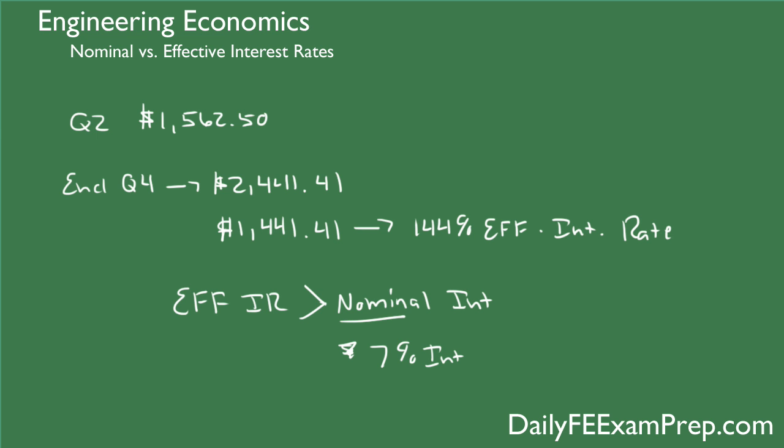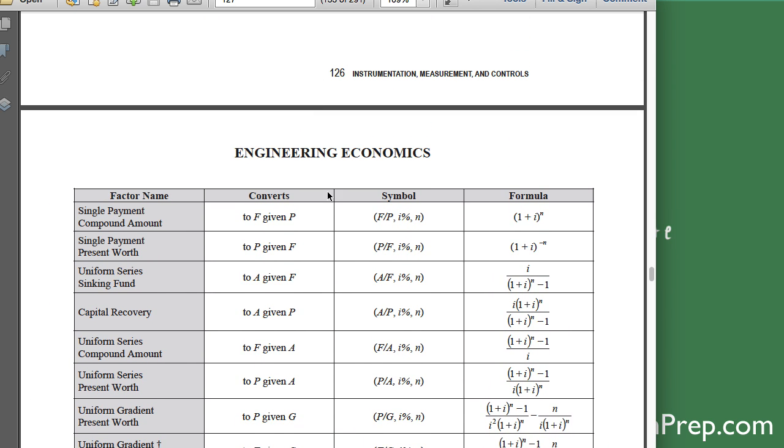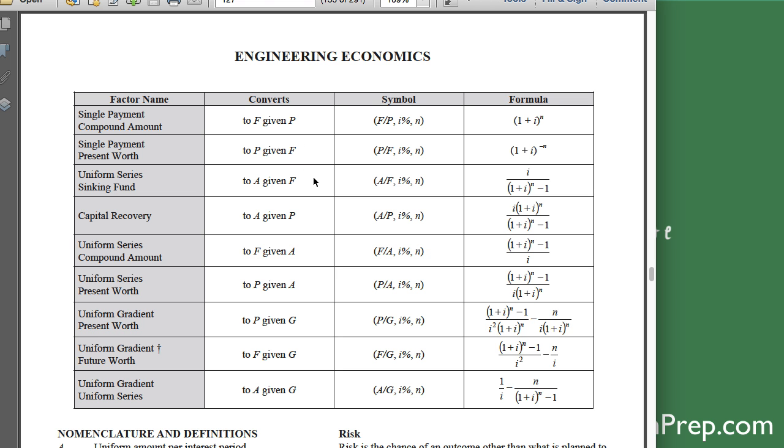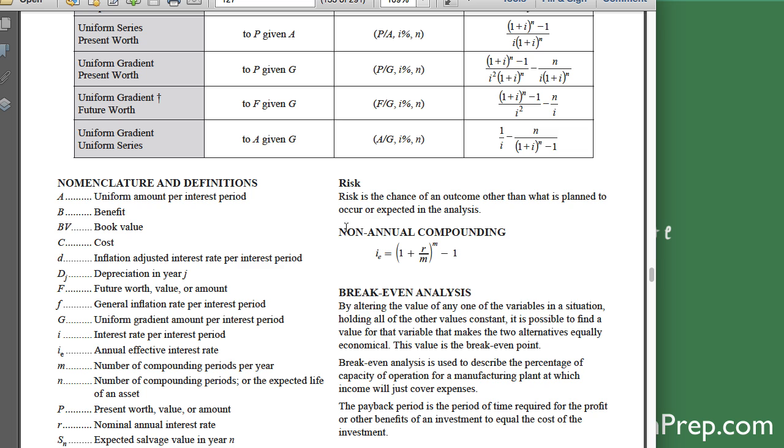So if you go to the Engineering Economics, I think it is page 127 of the FE Exam Supplied Reference Handbook by NCEES, you'll see that to calculate your effective interest rate, you look at this non-annual compounding formula, because everything is based on one year. If it's compounding every year, then it's just going to be equal to your nominal interest rate, but anything that's not annual, then you have to convert it into this effective interest rate. So that's I sub E, annual effective interest rate. So annual effective interest rate is always going to be greater than your nominal value, and the key reason is because it's a trade-off. If your lender is giving you the ability to pay it off early, then he's going to want to charge a premium for that service. So that's the trade-off with effective interest rate and nominal interest rates.